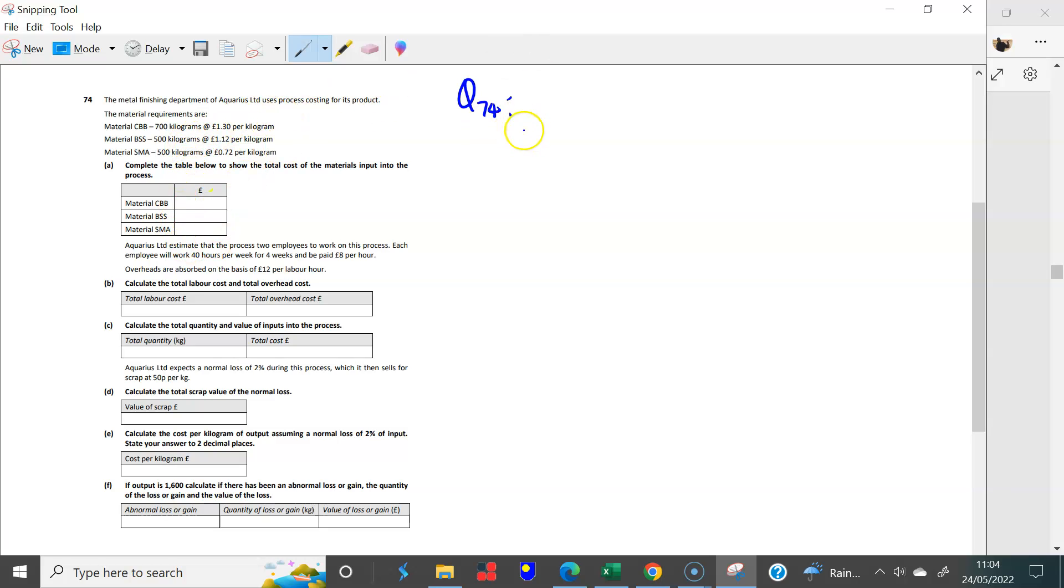And then we have these three materials. We have 700 kilograms at £1.30 each. So you have 700 times £1.30, and that's 910. And then we have 500 at £1.12, and that's 560 pounds. So you have 500 at £1.12. And then finally, you have 500 kilograms again, and this time at 72p. So that's 500 times 0.72, and that takes you to 360. So we have that done in the bag.